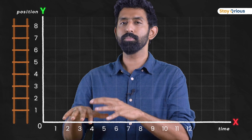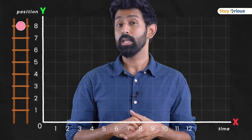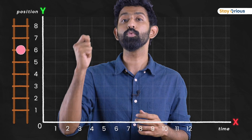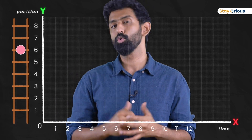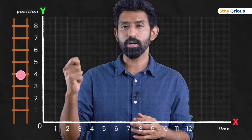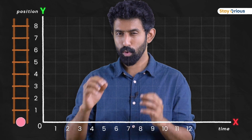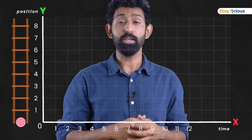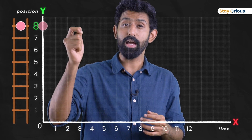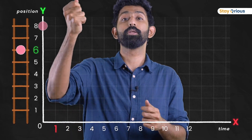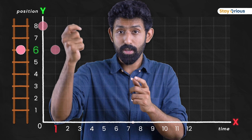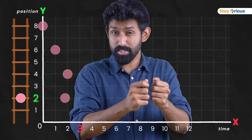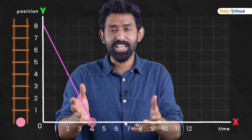But now let me ask you this: if I start not from the bottom but somewhere up there, and every second I'm climbing down two meters — climbing down, climbing down, climbing down — what would the graph look like? You start there, and then after a second you've climbed down two meters. Climb down two meters again. Connect the dots once again and you see a line going downward.